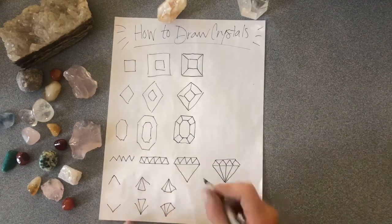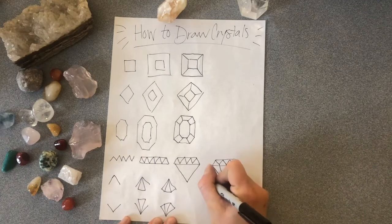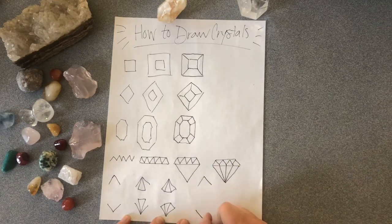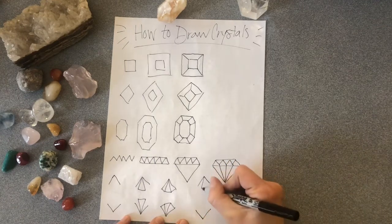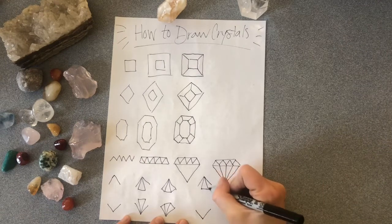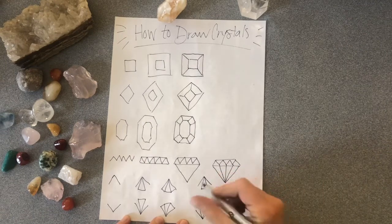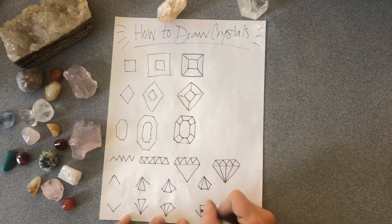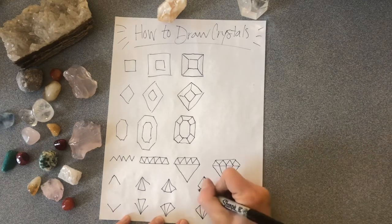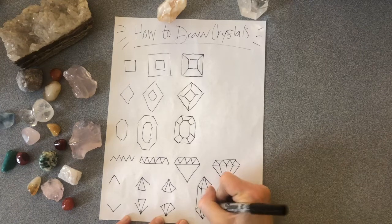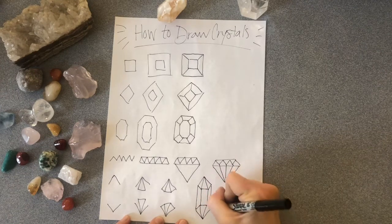For the next shape, you're going to create a triangle at the top and a triangle at the bottom, and then a smaller one that goes longer at the top and the bottom. Connect those two, and then connect all your edges.